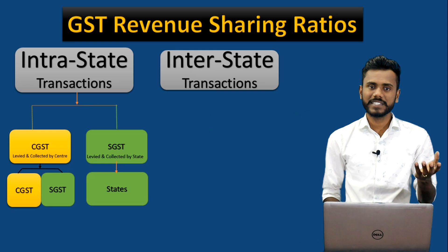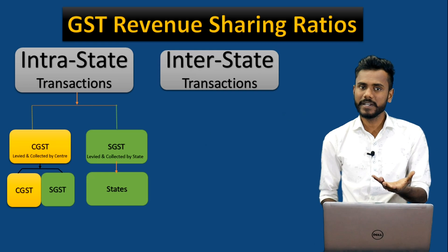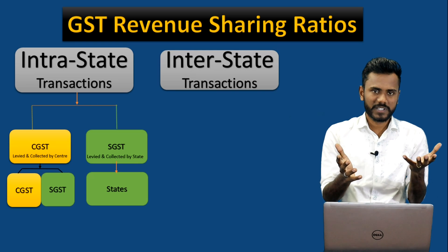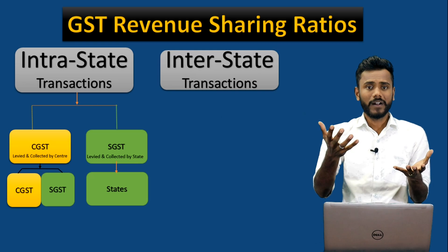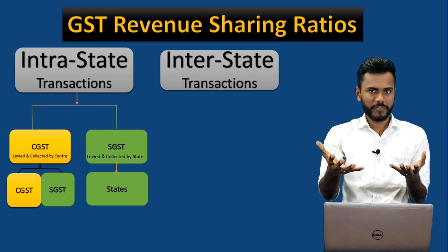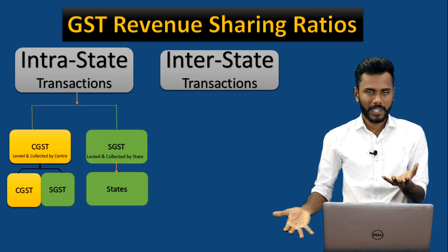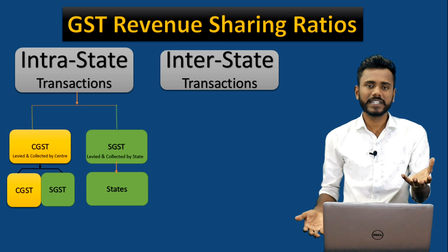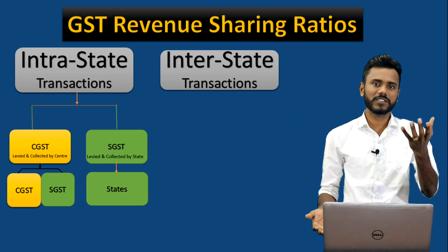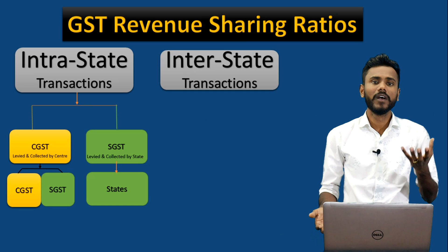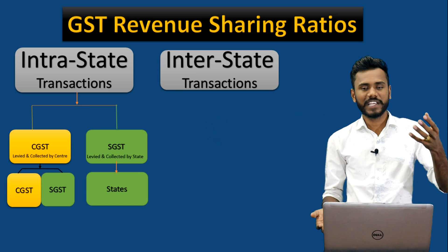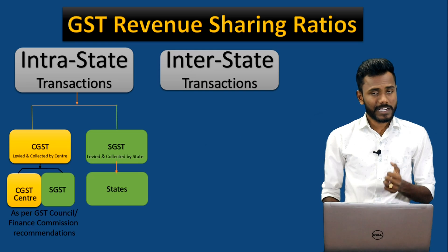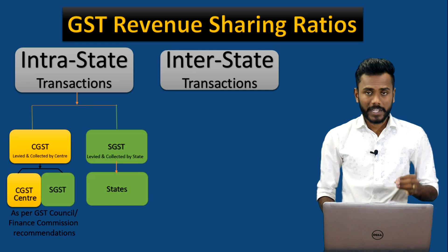Initially on the transaction, CGST and SGST are collected and the sharing ratio between central and state is 50 percent and 50 percent. The complete 50 percent SGST goes to the respective state. Again on the same transaction, whatever CGST is collected, the center is also going to distribute that revenue to the center and the states, as per GST council or finance commission recommendations.